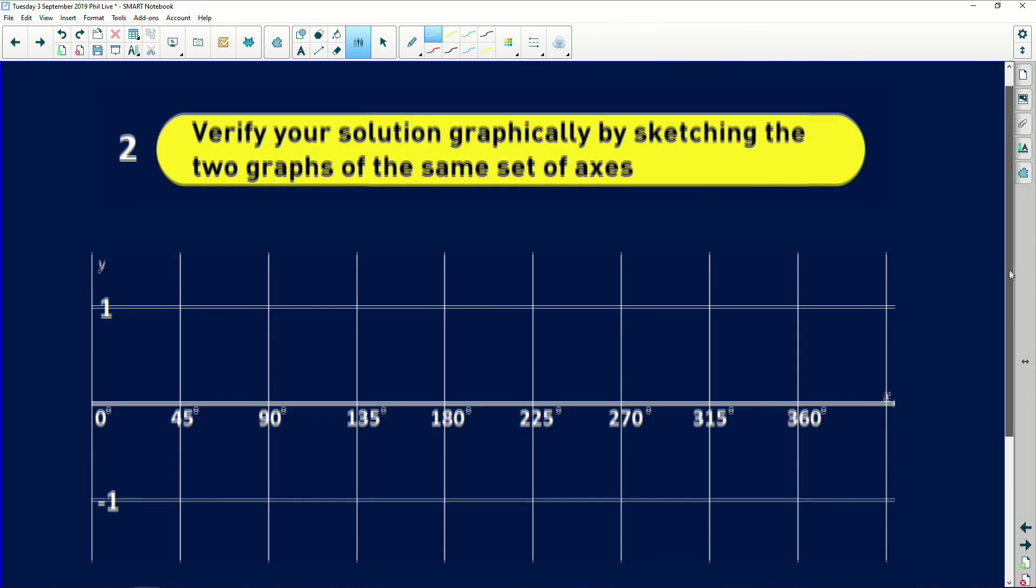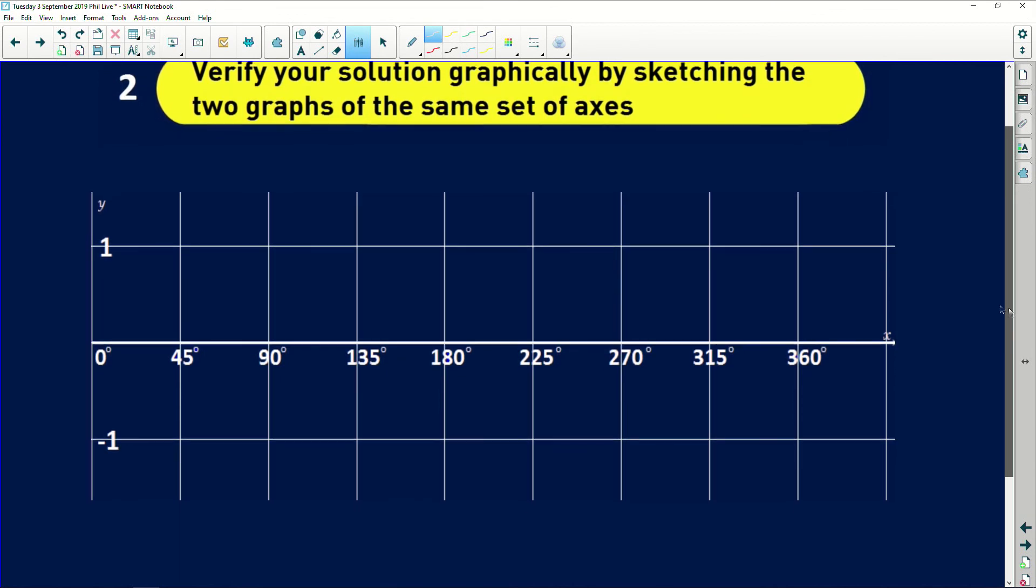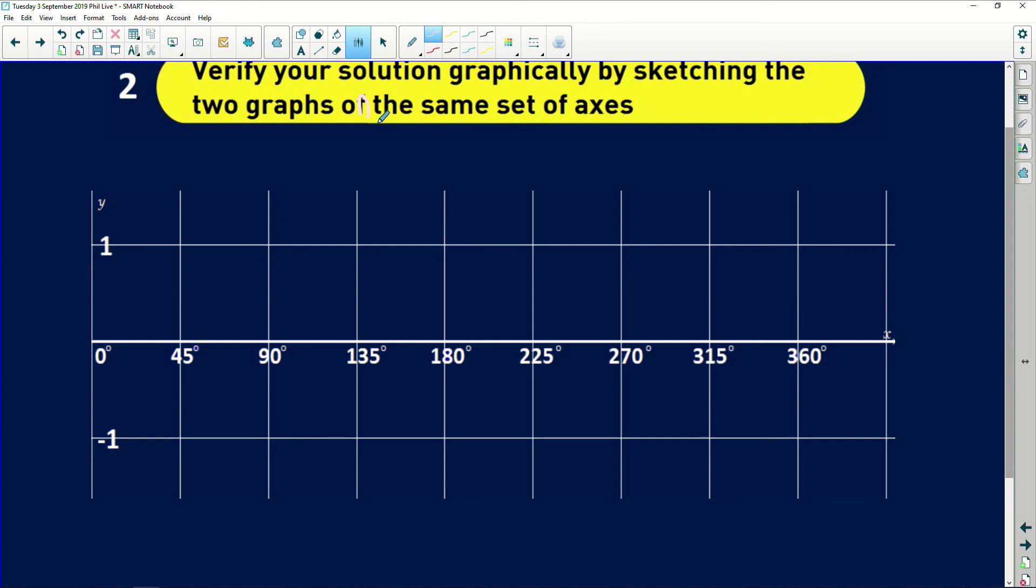So now here it says verify your solution graphically by sketching the two graphs on the same set of axes. That should say on. So we found that x is equal to 30 or 150 or 270 degrees. So let's sketch our graphs.